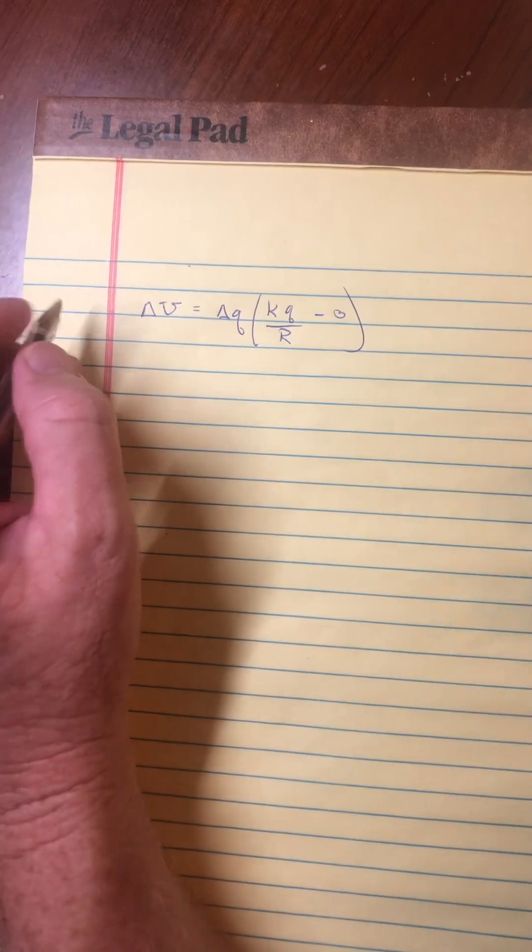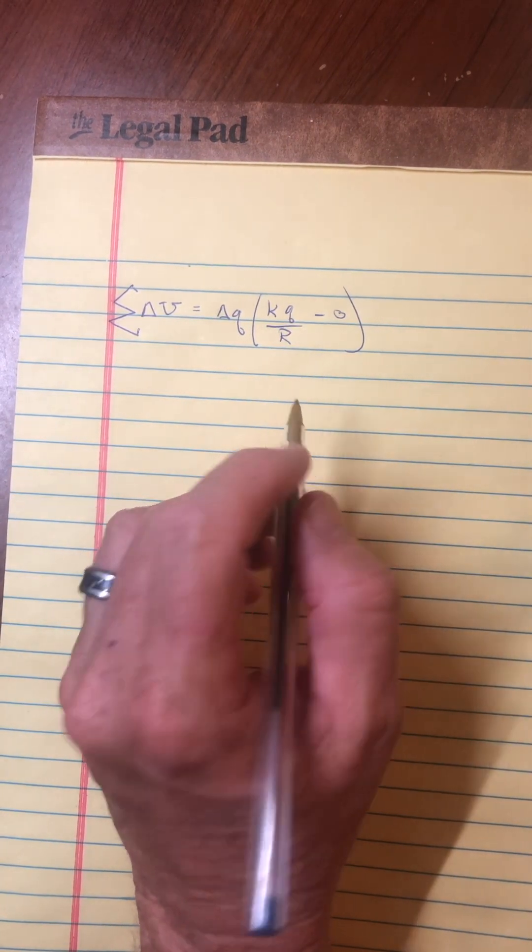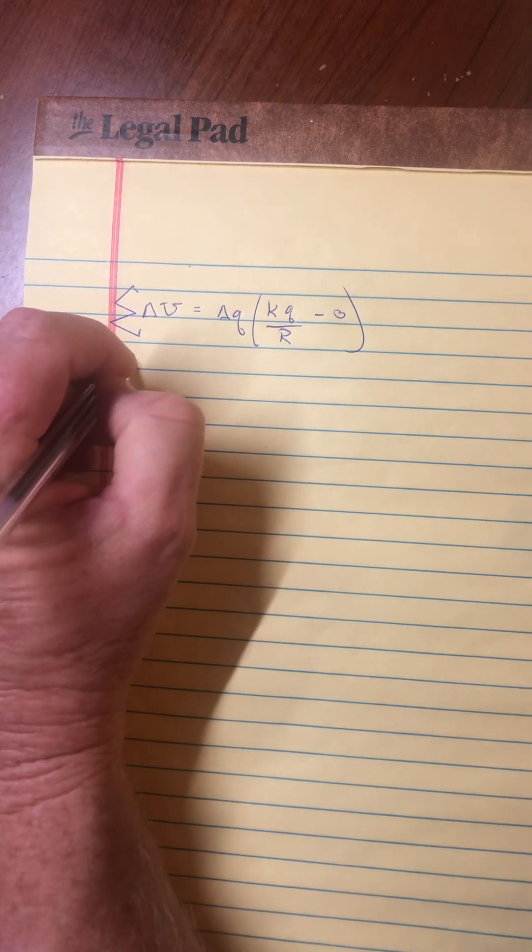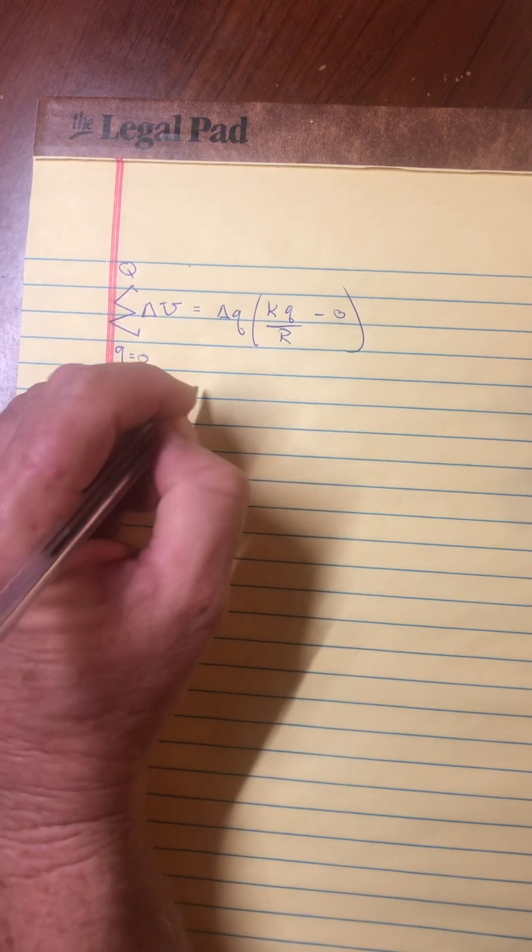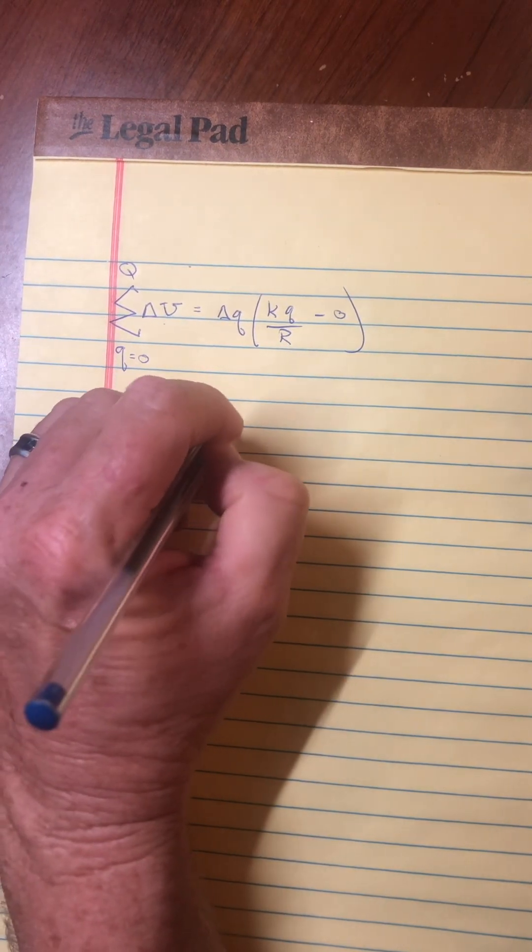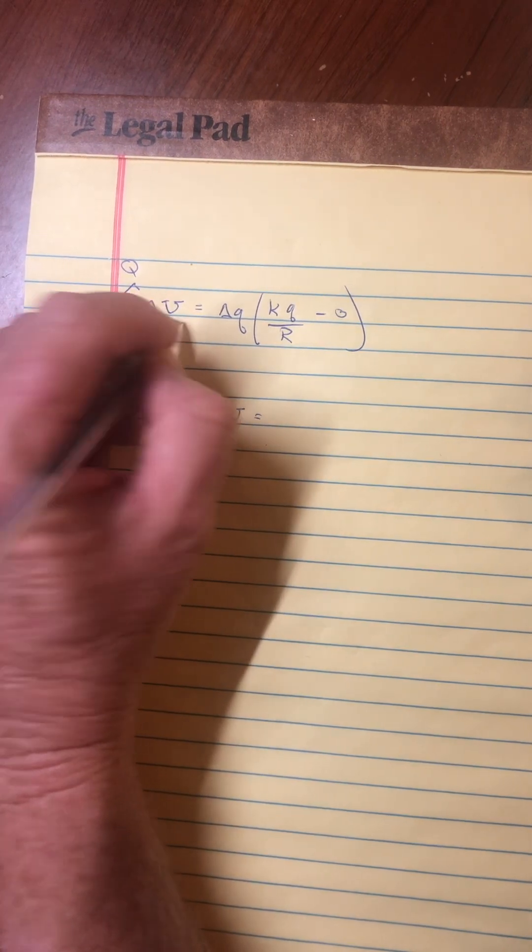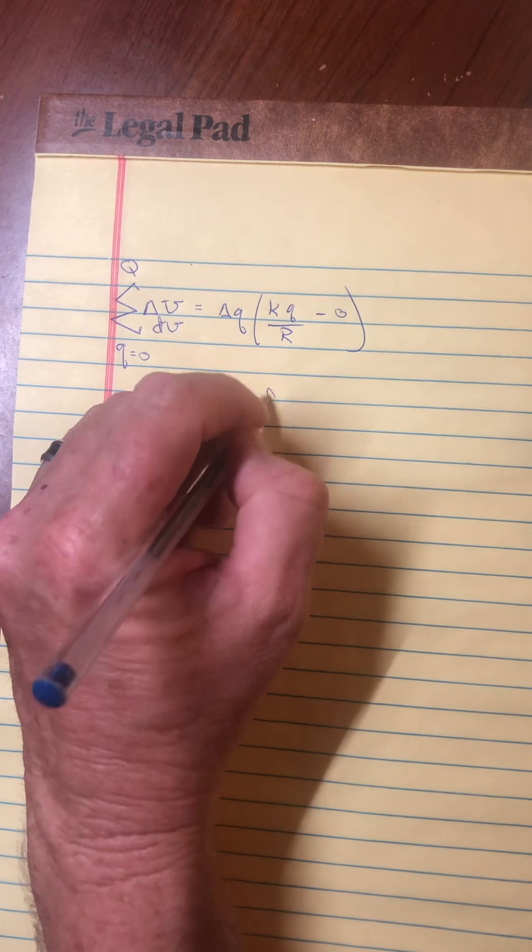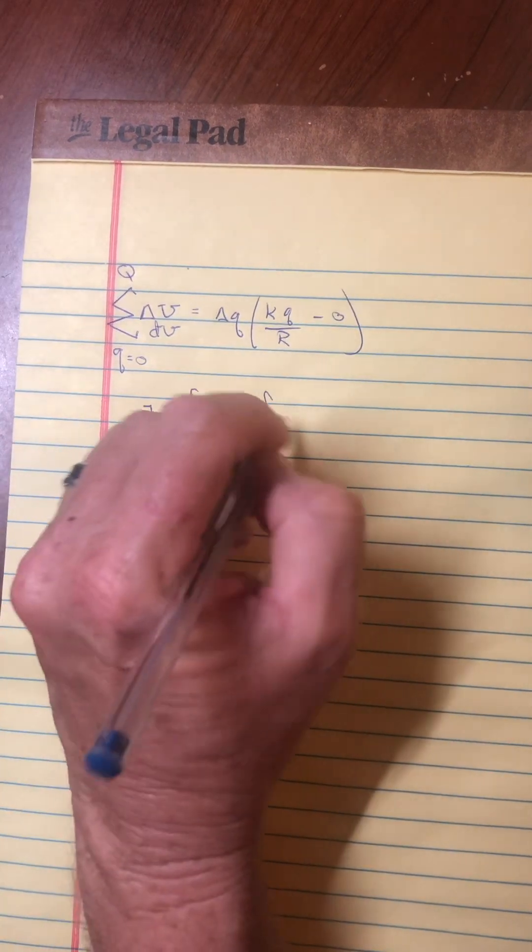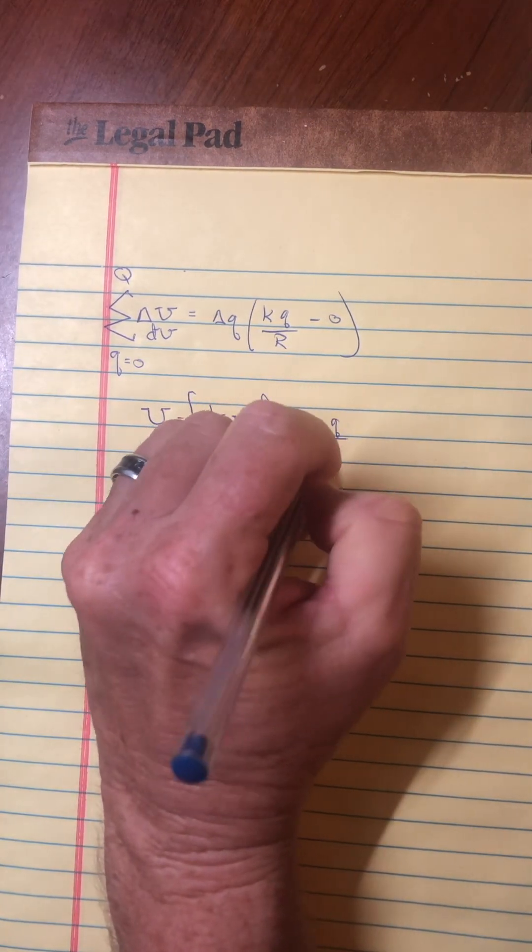And so if I think about taking this equation and adding it up, where I start with the charge of the sphere at zero and keep going, Q starting at zero and going to capital Q, I could write it in a calculus form by saying let's think of this as a small amount of energy dU. And then I add it up getting my total energy. So this would be the integral of dQ times KQ over R.